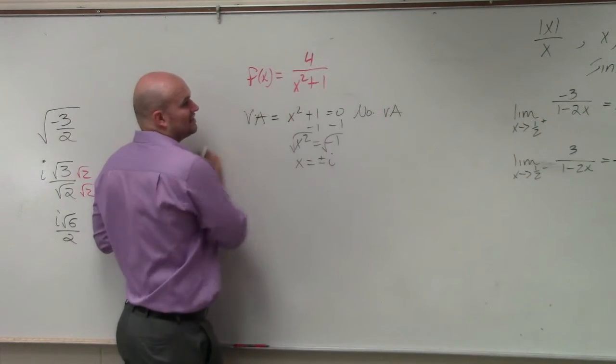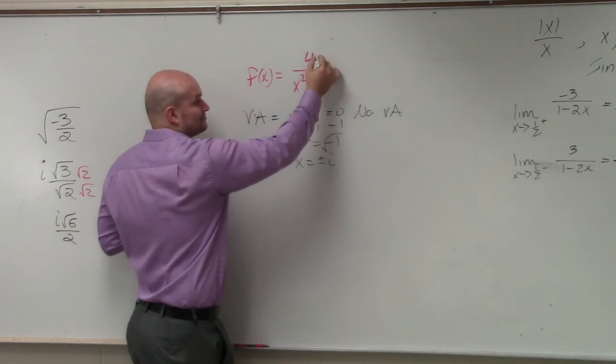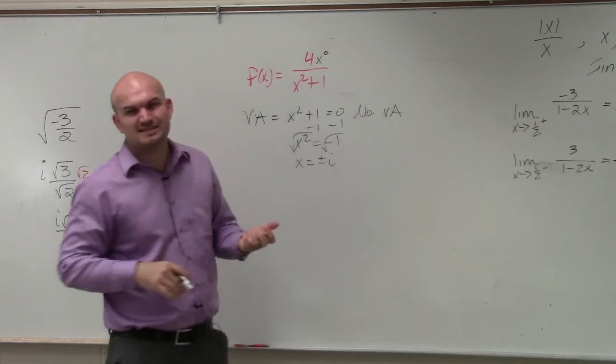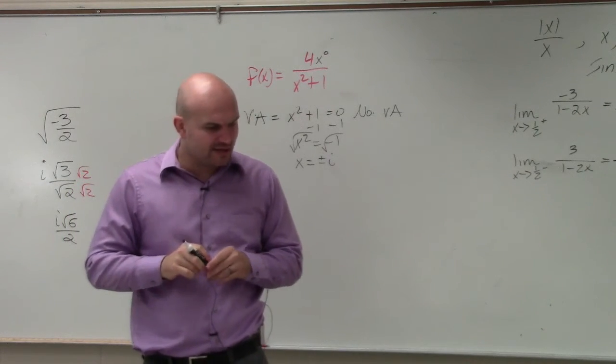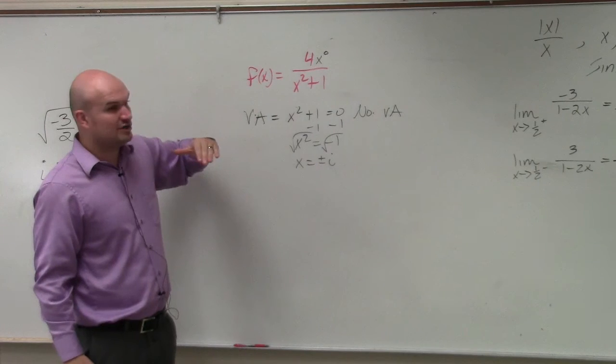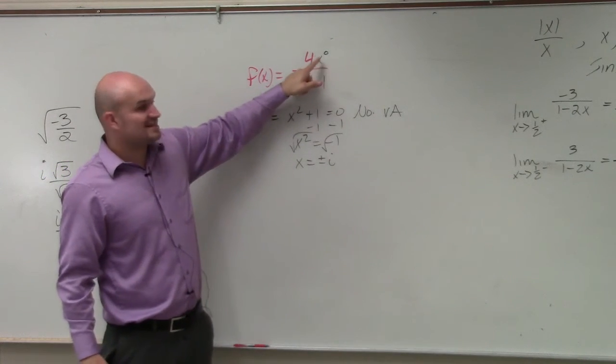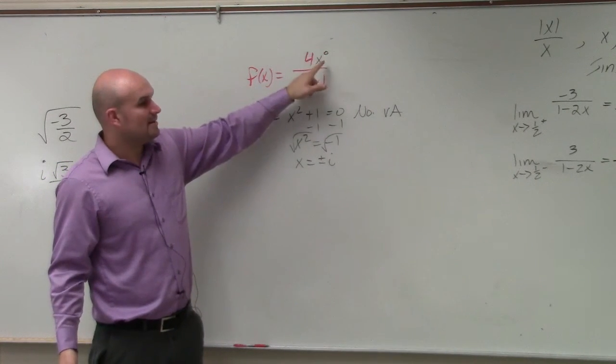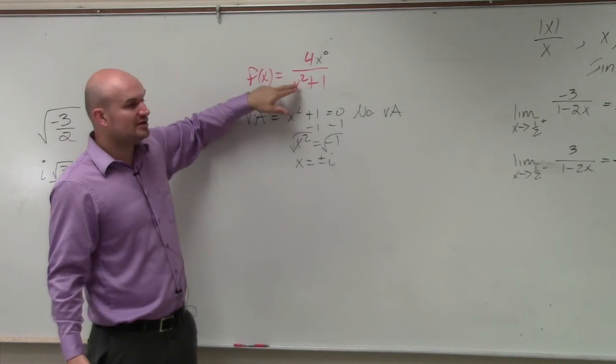The next thing is we need to look at the horizontal asymptote test. This is why I chose these two, at least over there. So again, we identify the degrees, since x to the 0 is always 1. But remember, we're comparing the degree in the numerator to the degree in the denominator.